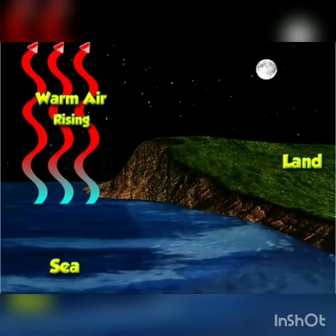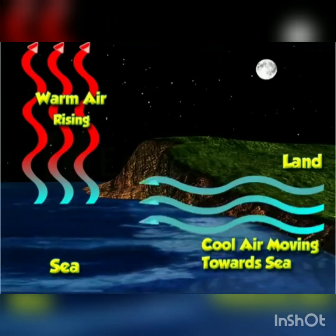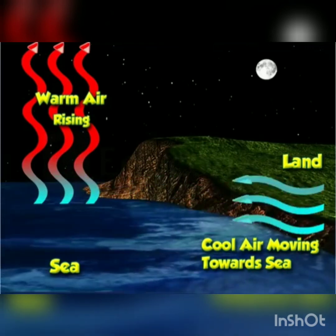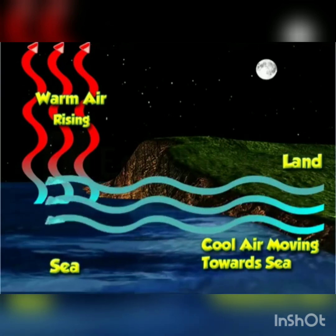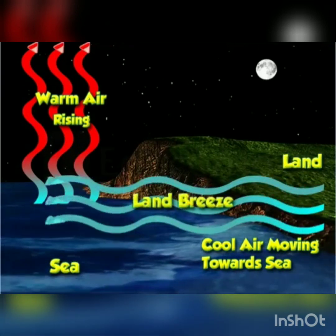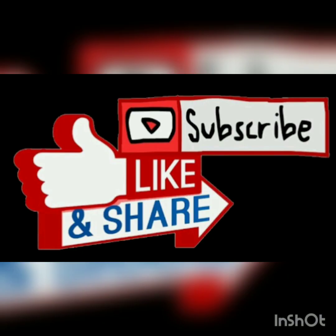Land breeze: at the same time, the cool air over the land moves towards the sea to take the place of the warm air. Thus, wind blows from land to sea. Such winds are dry and are called land breezes. I hope this video made your concept clear about sea breeze and land breeze. And that's all for today. The PDF link of notes is shared in the description box.